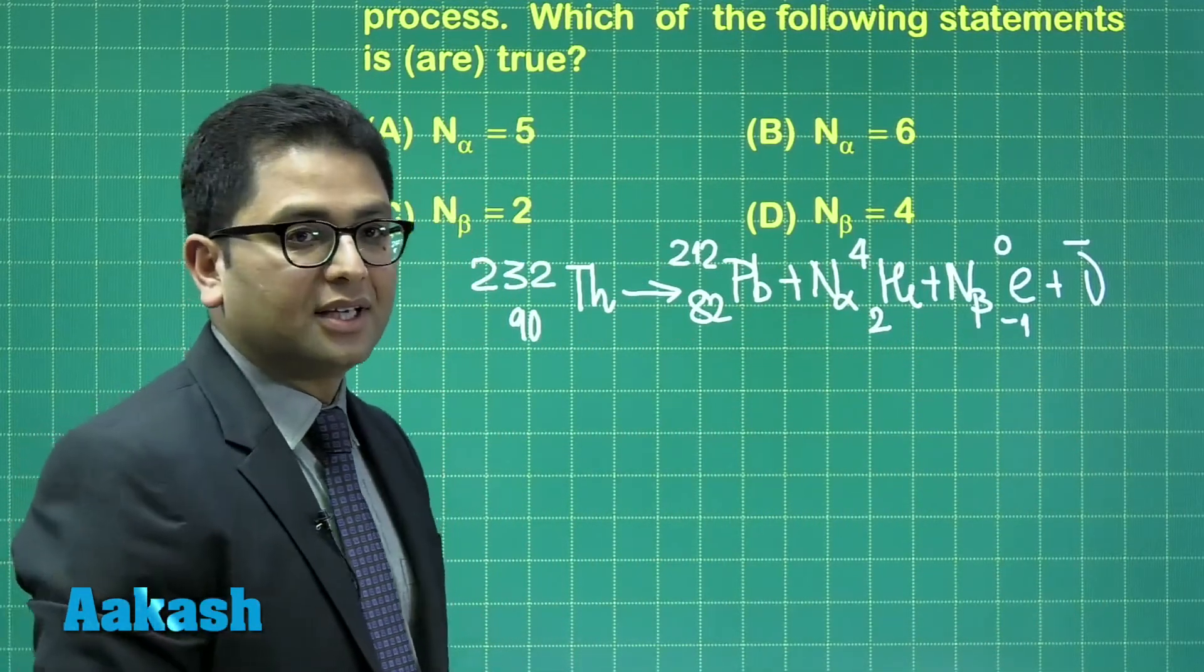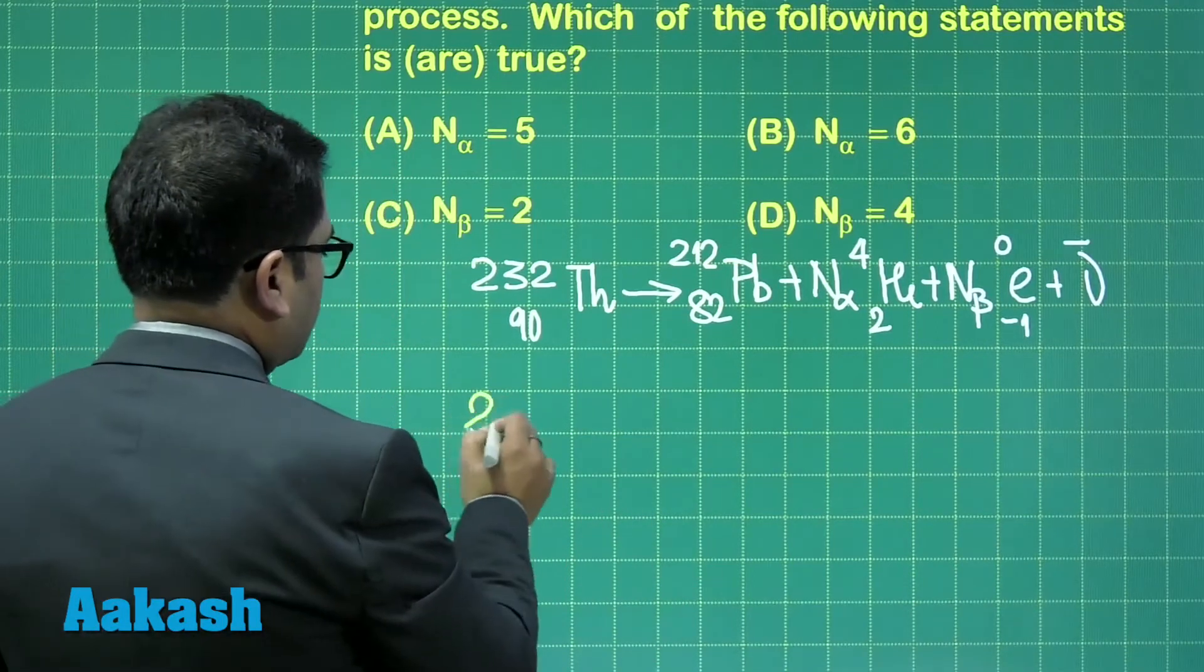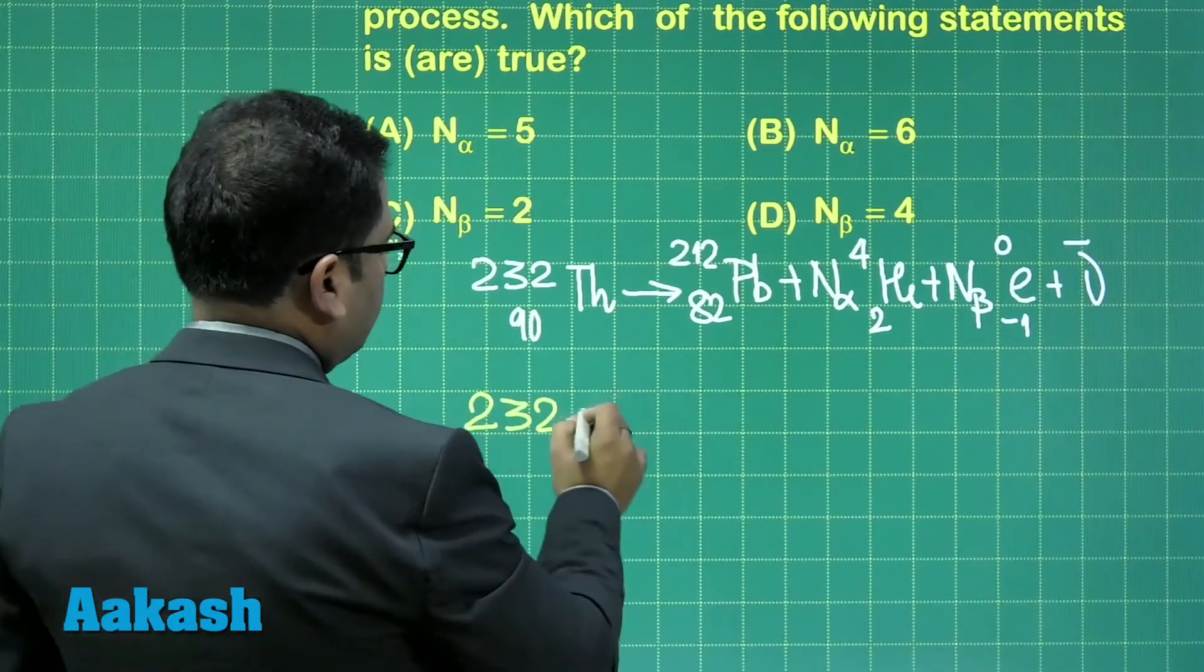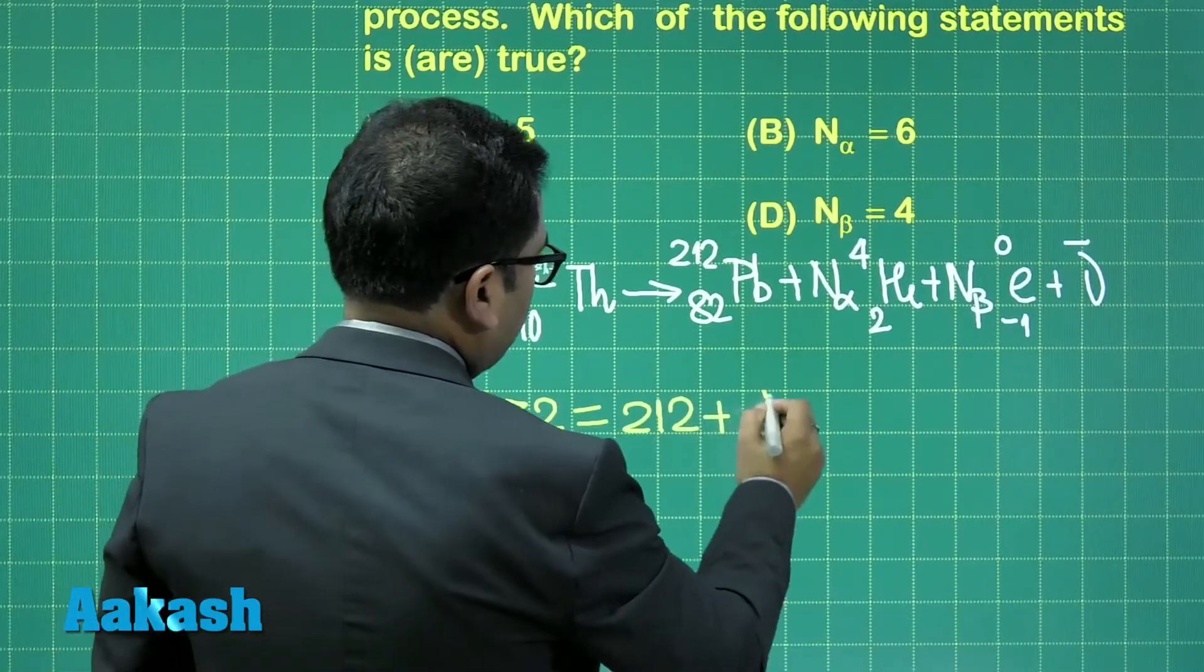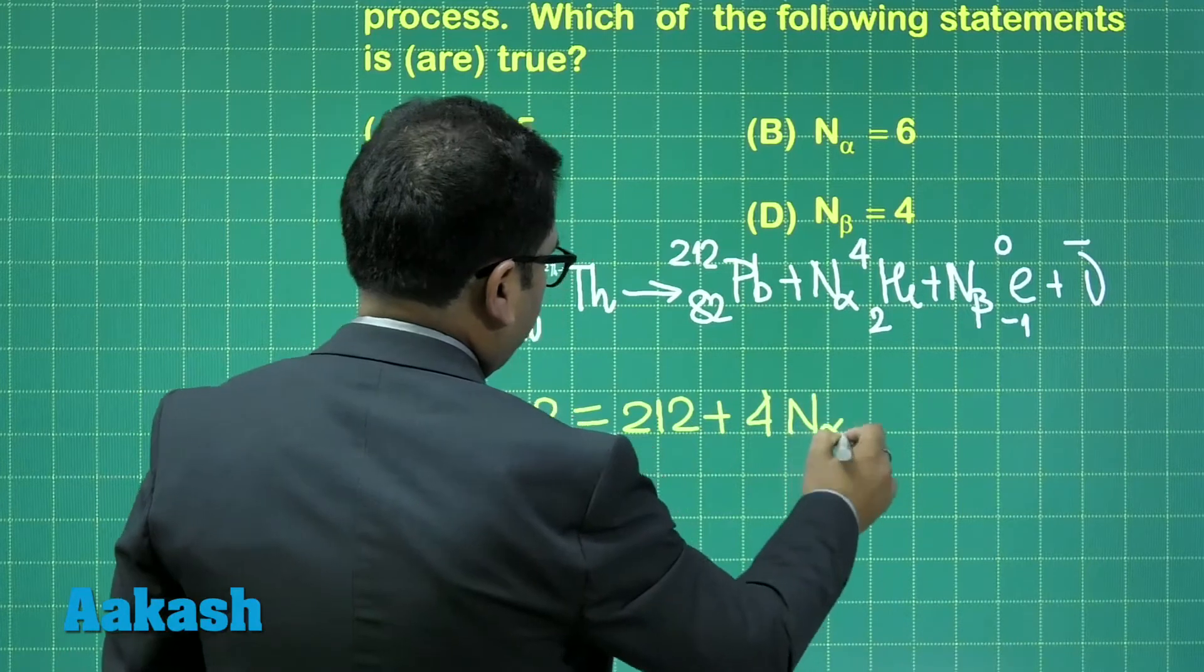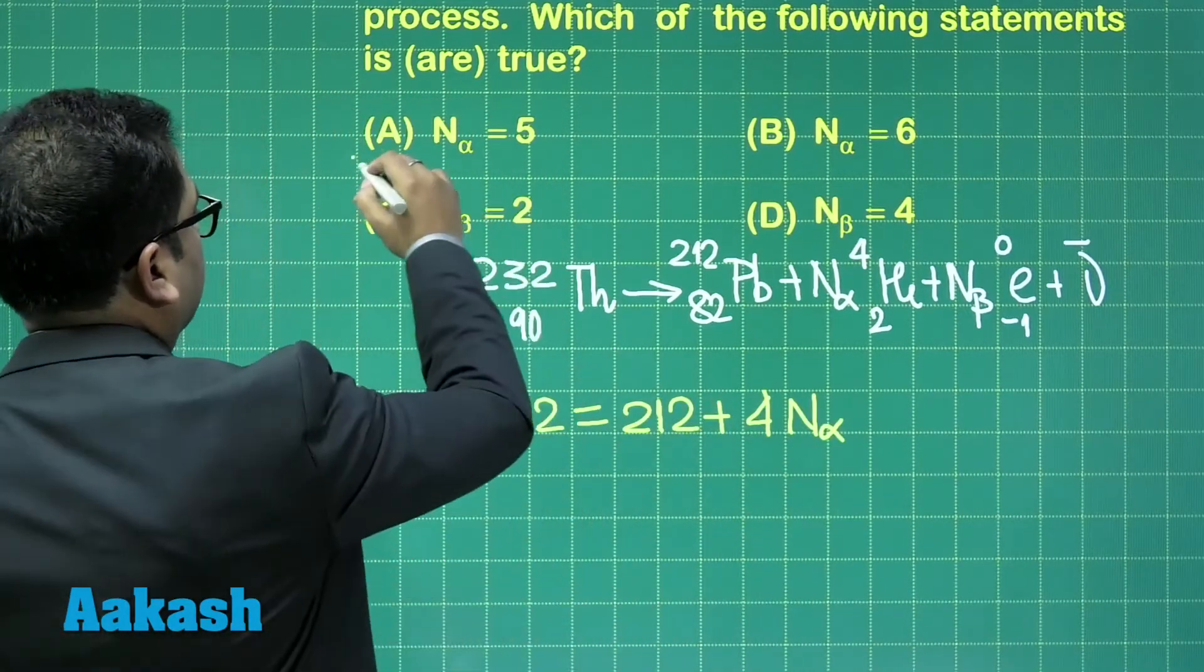Now you know in any nuclear decay, the mass number and the atomic number is conserved. So using this principle here, what you could see is 232 would be equals to 212 plus 4 times N_alpha. And this is 20, 20 by 4, that will be 5. In other words, the number of alpha particles emitted is 5.